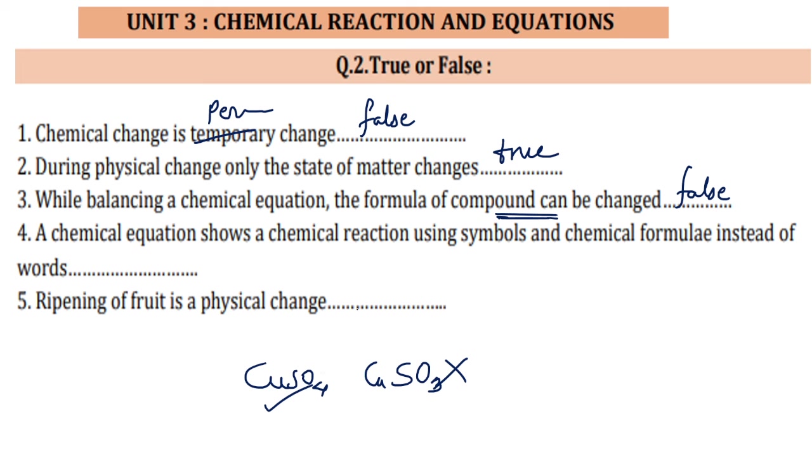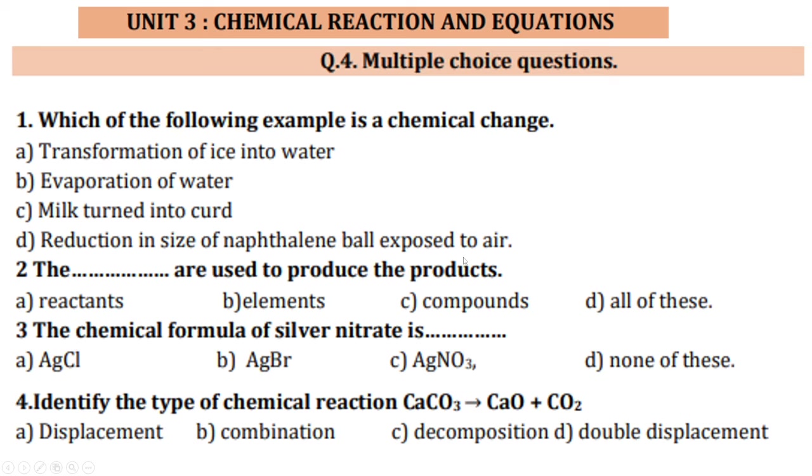A chemical equation shows a chemical reaction using symbols and chemical formulae instead of words. Yes it is correct. Reactants and products are shown on both sides of the arrow and the arrow is directed from reactant to product. Ripening of fruit is a physical change. No, it is a chemical change and it cannot be reversed. It is a permanent change.